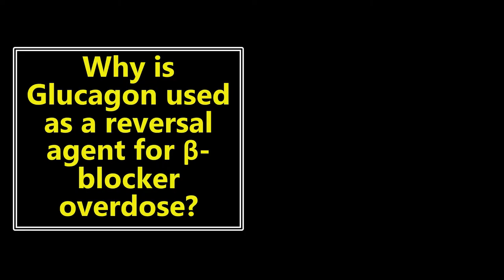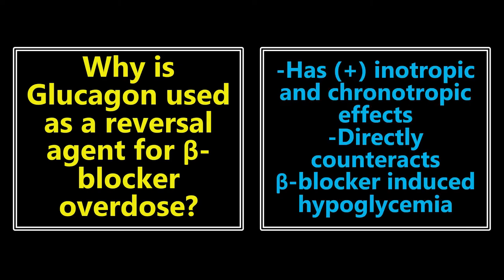Why is glucagon used as a reversal agent for beta blocker overdose? Beta blocker overdose is a really interesting toxic ingestion. The reason we like to use glucagon: first, it has positive inotropic and chronotropic effects, which can help counteract the bradycardia and hypotension caused by a beta blocker overdose. But also importantly, it directly counteracts beta blocker-induced hypoglycemia. These patients can be persistently hypoglycemic, and glucagon is a great medication to help reverse that.